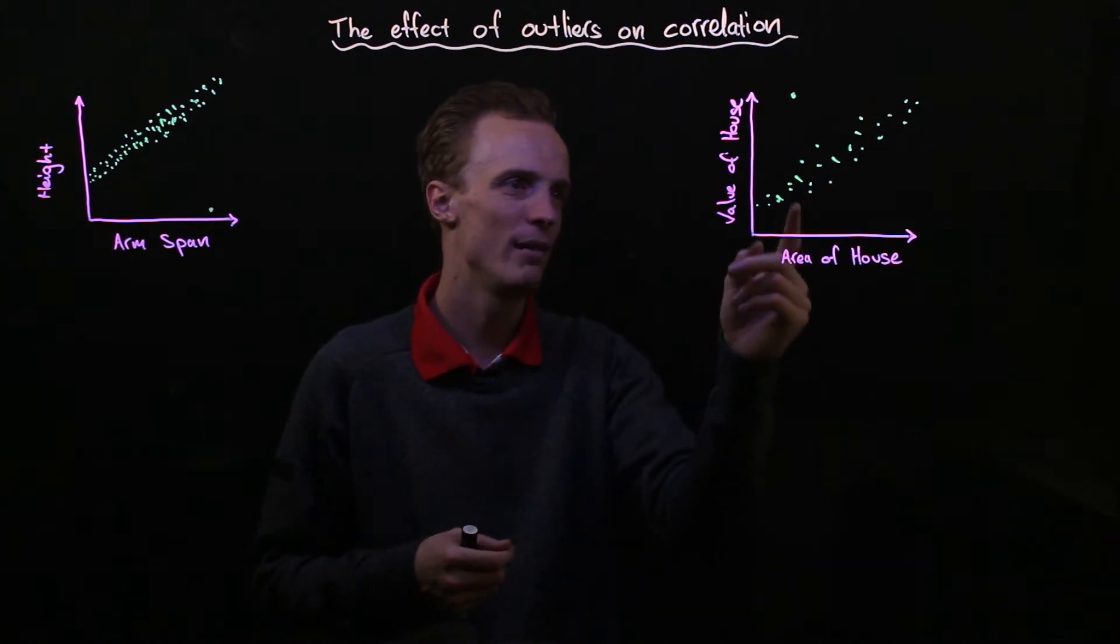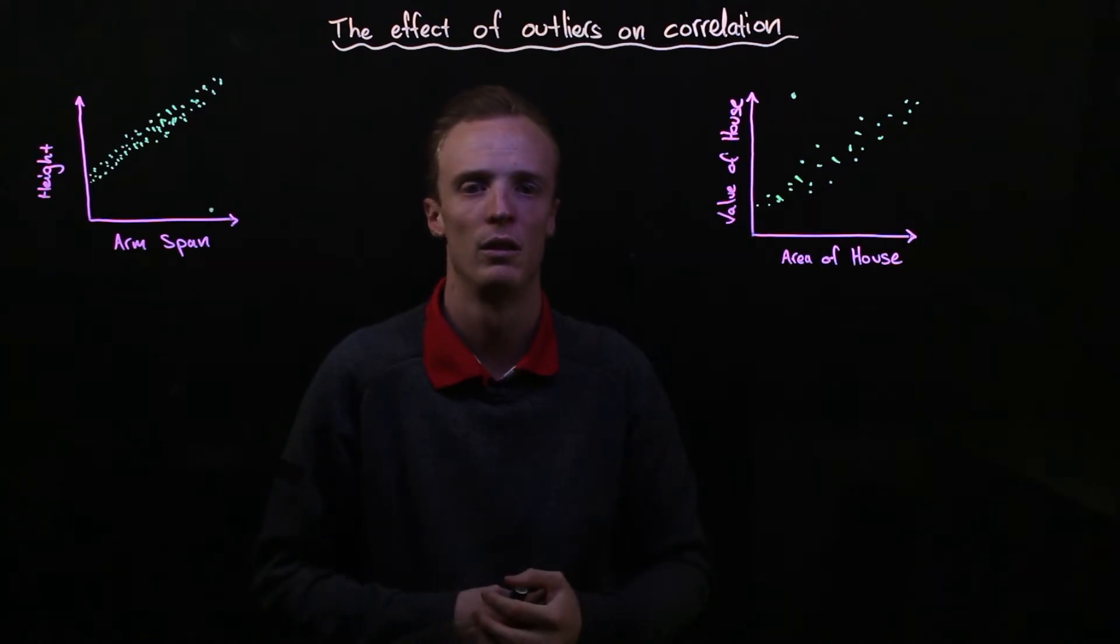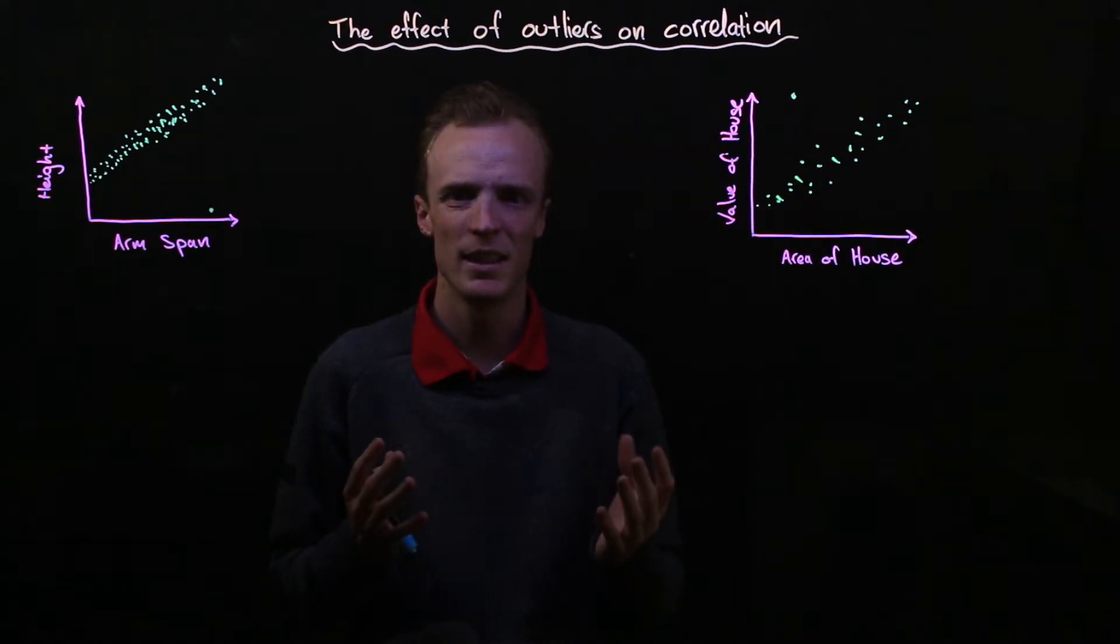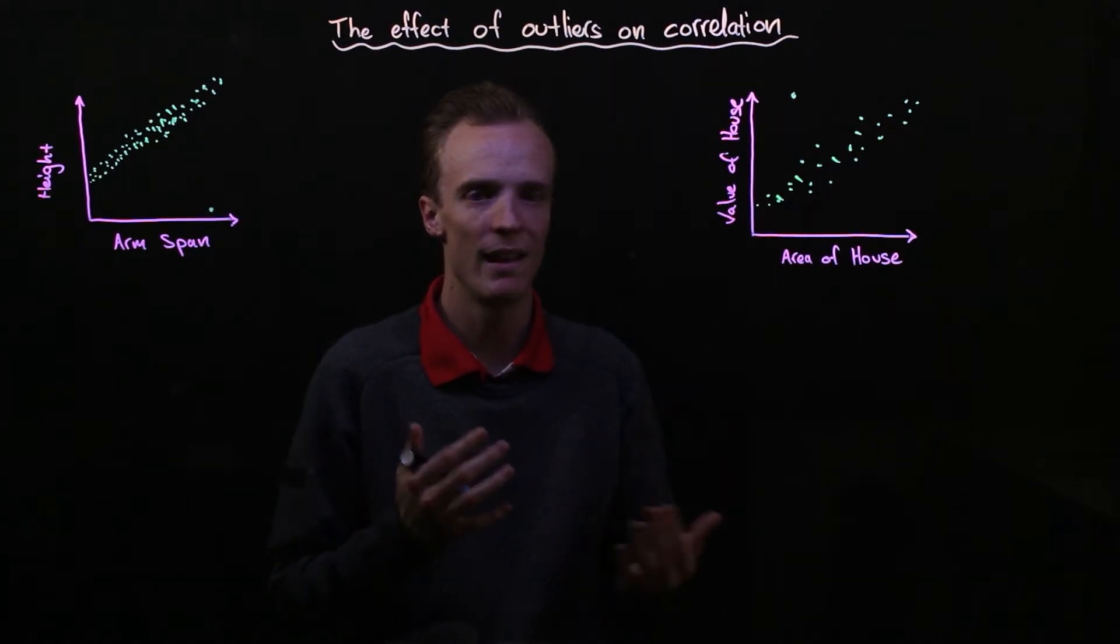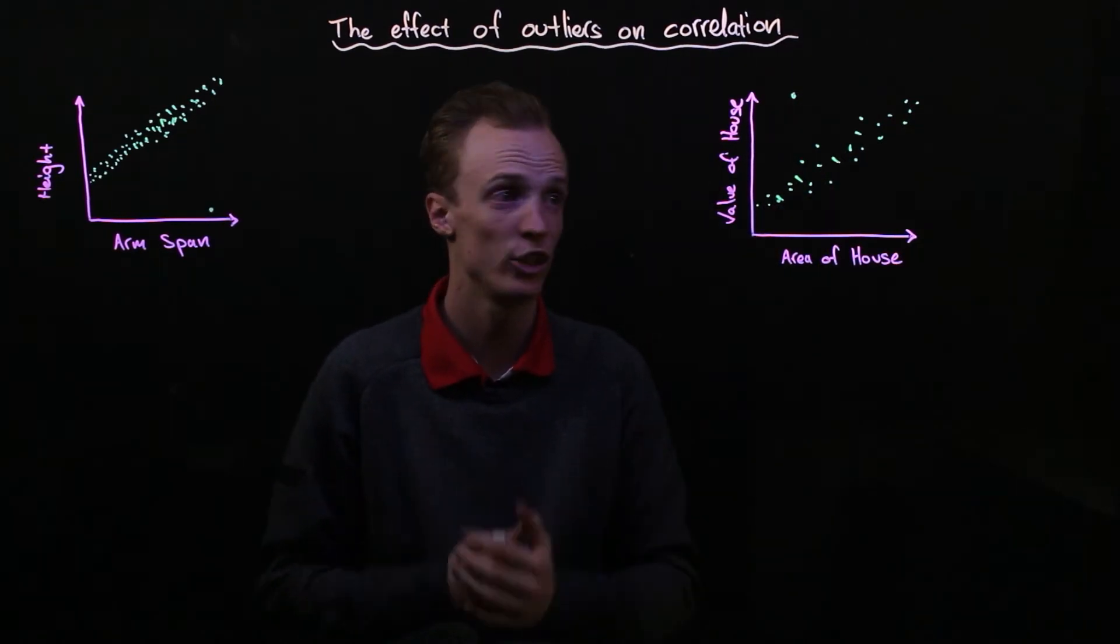Where it's got a smaller area of the house, but it's got a significantly higher value. Now that doesn't necessarily mean that we can guarantee that this is not a valid point, a genuine point, or an error in collection.